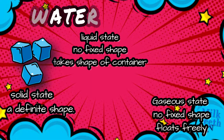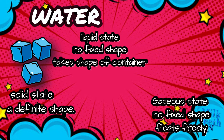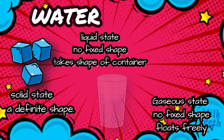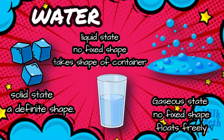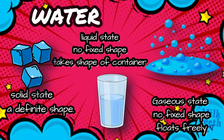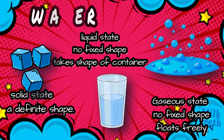Water in a solid state has a definite shape like other solids. Liquid water has no fixed shape — it takes up the shape of the container in which it is kept. The gaseous state of water also has no fixed shape; it floats freely just like other gases.